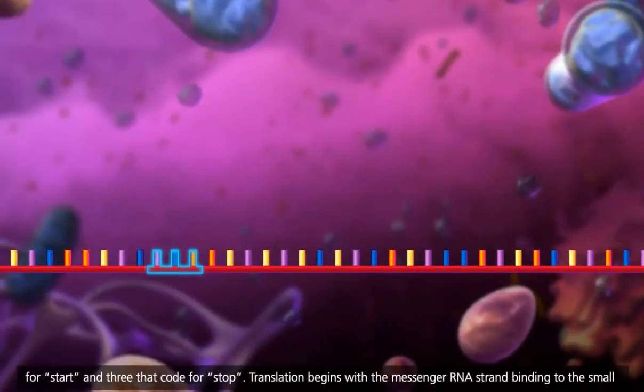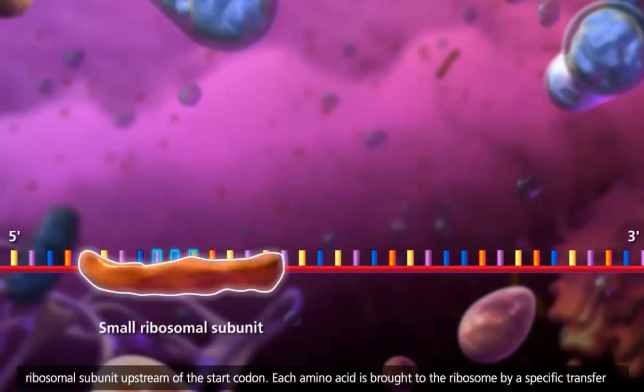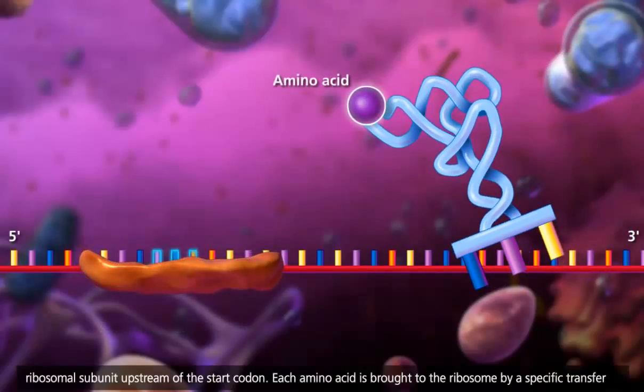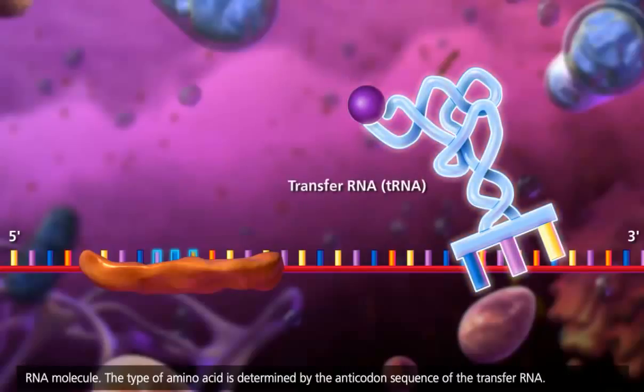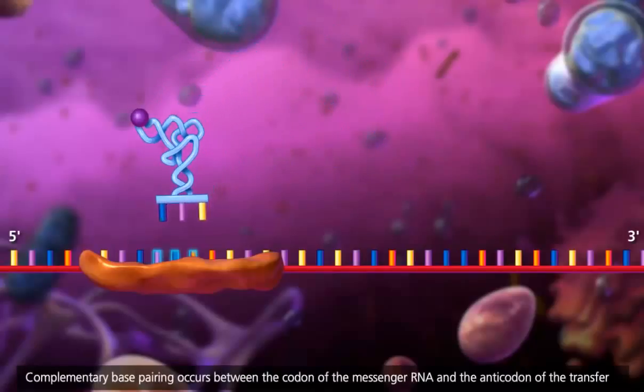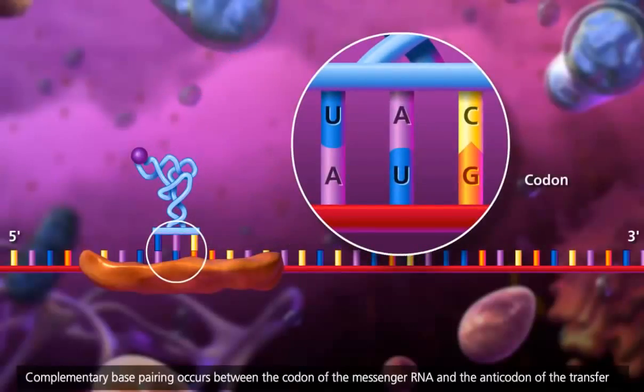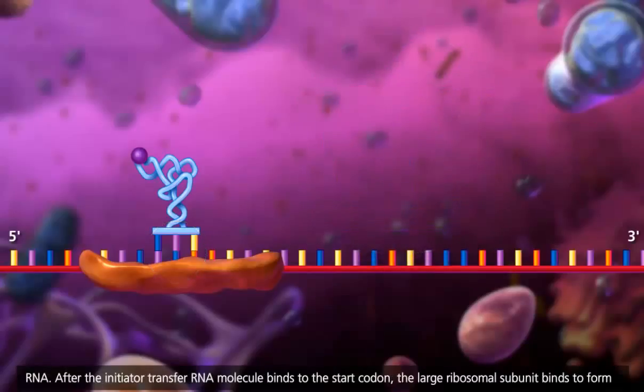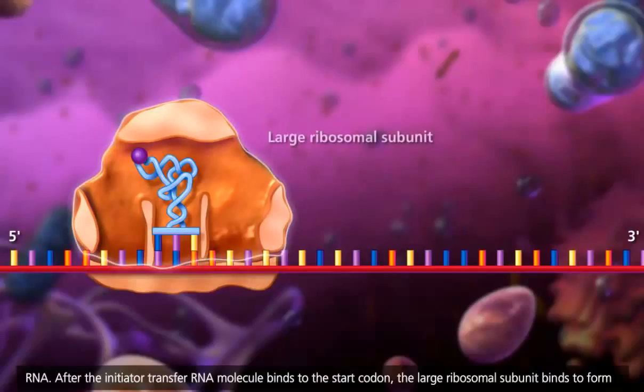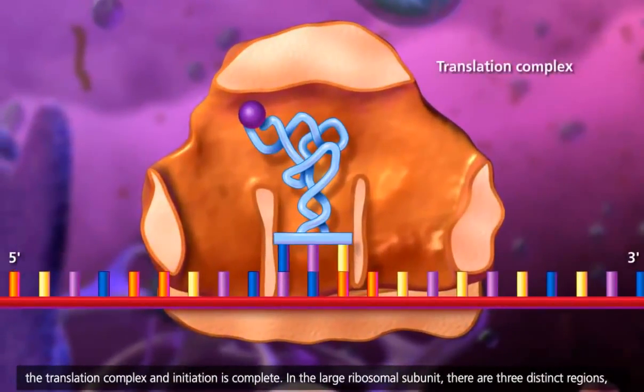Translation begins with the messenger RNA strand binding to the small ribosomal subunit upstream of the start codon. Each amino acid is brought to the ribosome by a specific transfer RNA molecule. The type of amino acid is determined by the anticodon sequence of the transfer RNA. Complementary base pairing occurs between the codon of the messenger RNA and the anticodon of the transfer RNA. After the initiator transfer RNA molecule binds to the start codon, the large ribosomal subunit binds to form the translation complex and initiation is complete.